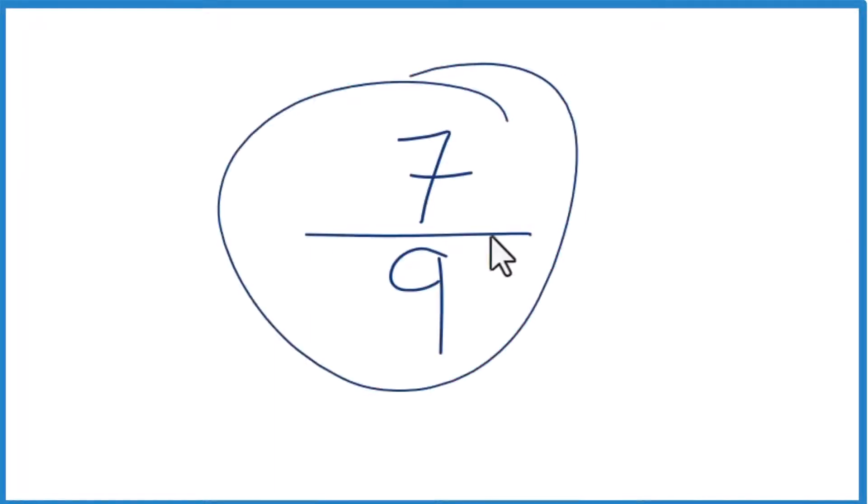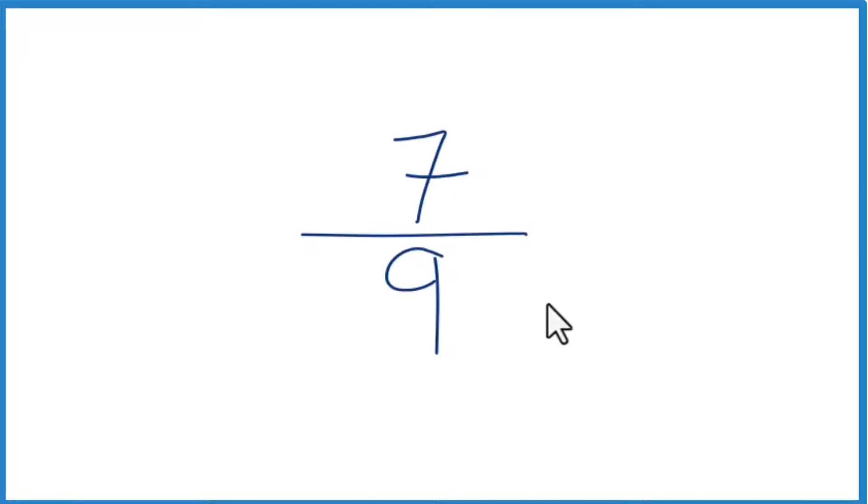Let's write the fraction 7 ninths as a decimal, and here's how we do that. We know that 7 is smaller than 9, so 7 divided by 9, that's going to be less than 1. That'll be our decimal.